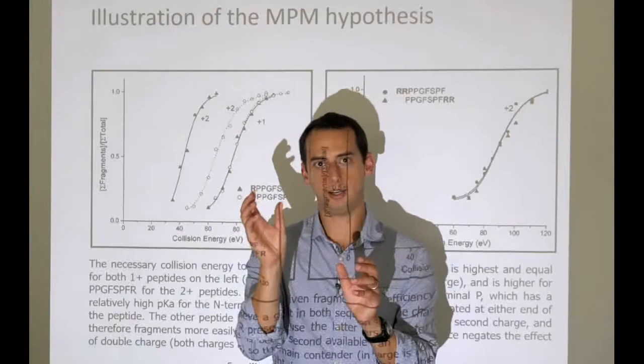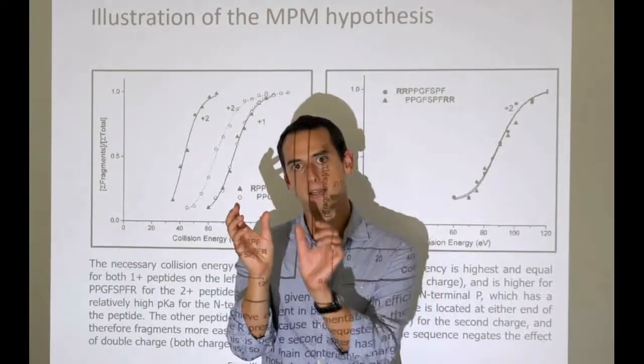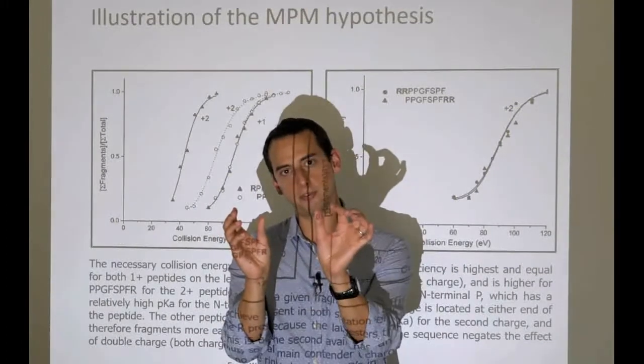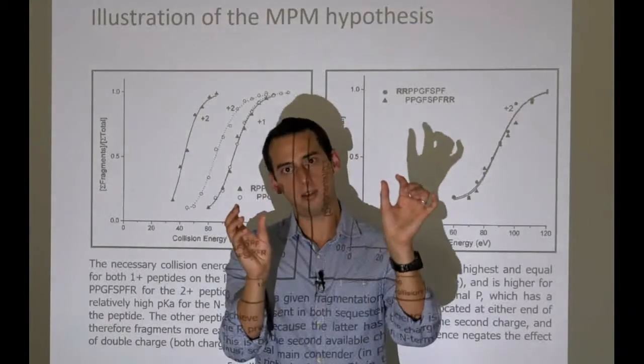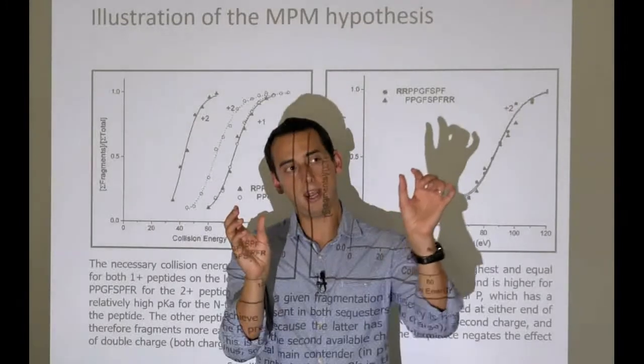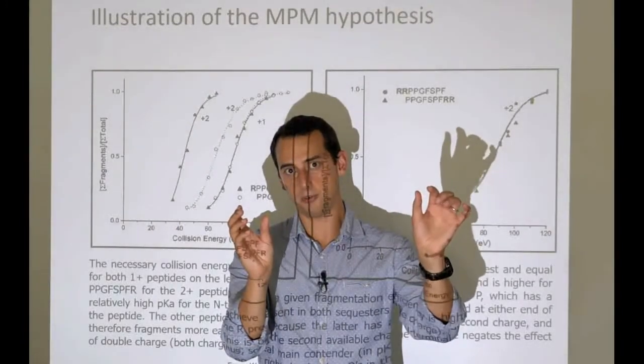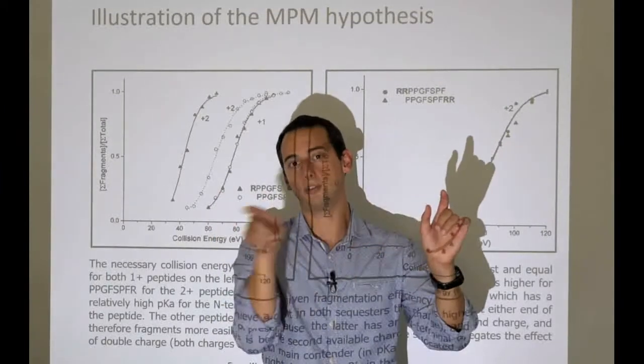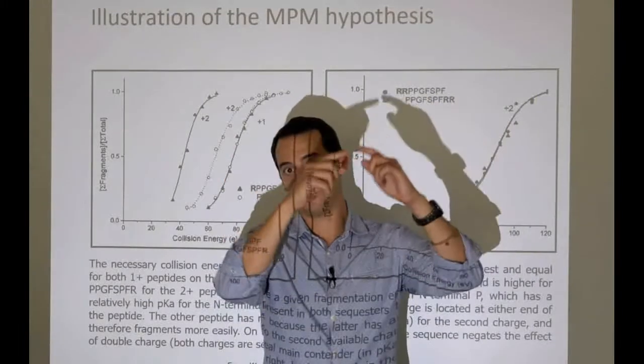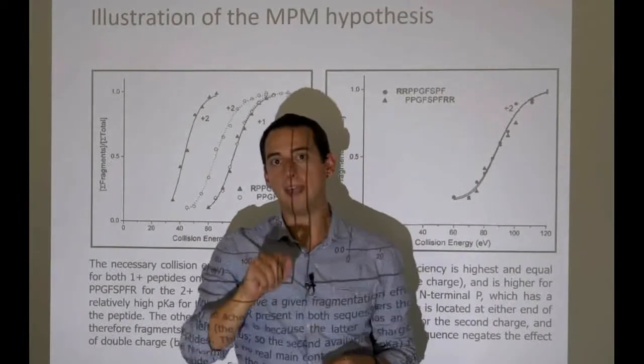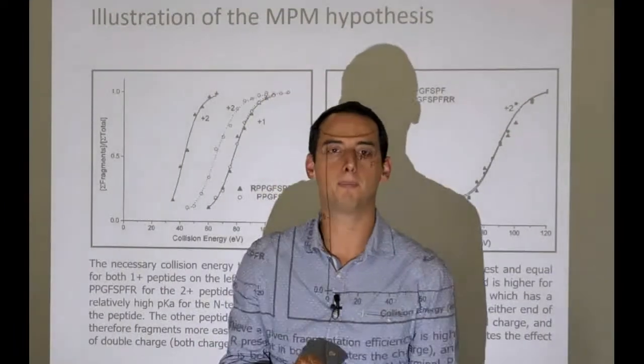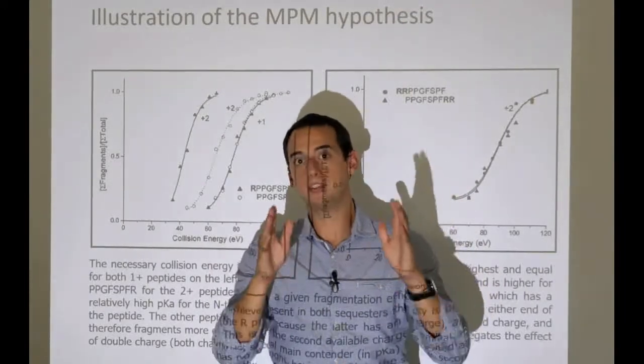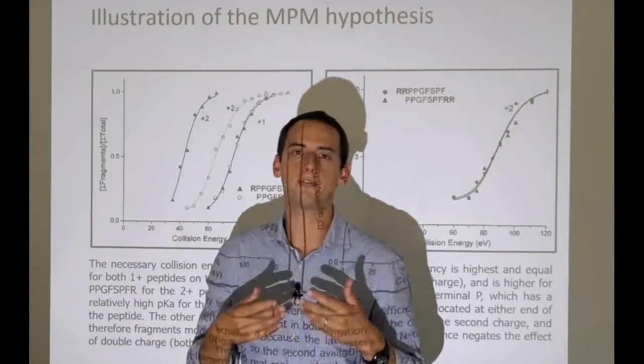When we break a peptide according to BY breakage at the peptide bond, we get a very stable Y ion and a very unstable B ion. B ions, if you give them a little energy, will refragment and quickly break themselves down. In HCD with this higher energy, most B ions are gone—they don't show up anymore. With a very notable exception: the B2 ion. What's special about the B2 ion?